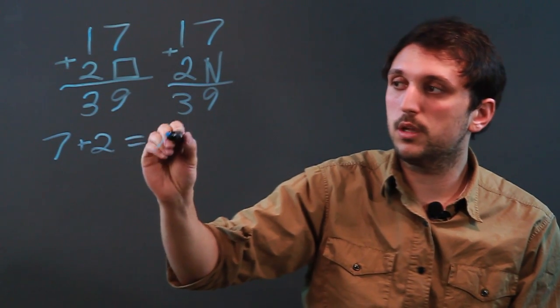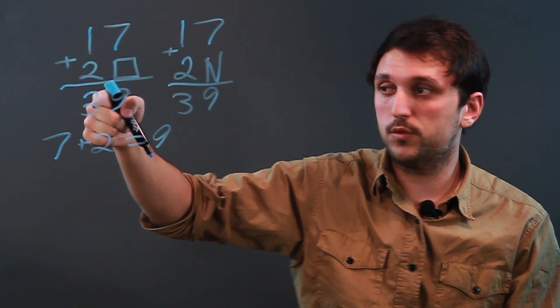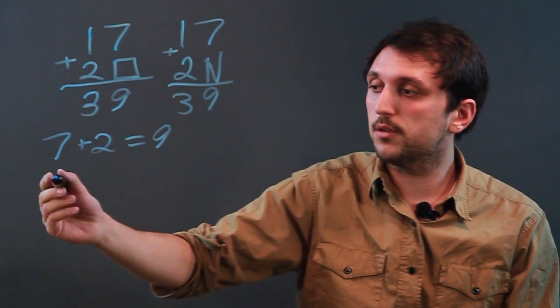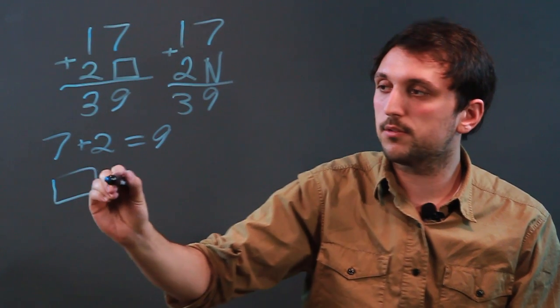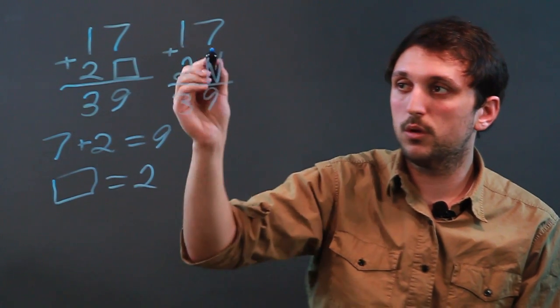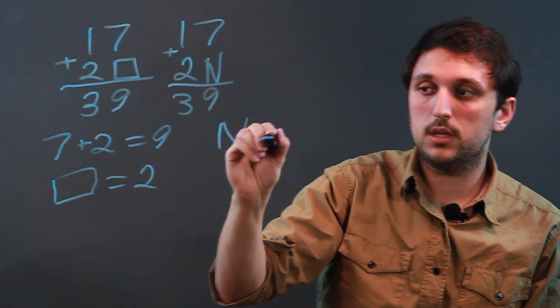7 plus 2 equals 9, because 1 plus 2 equals 3. And that means that this empty box equals 2, or in this case, n equals 2.